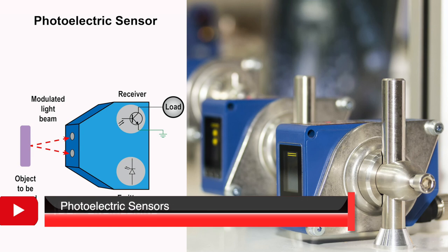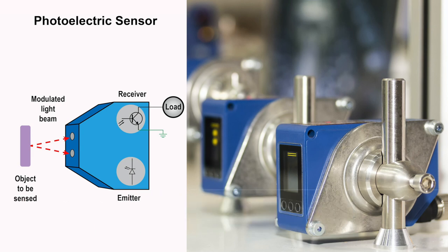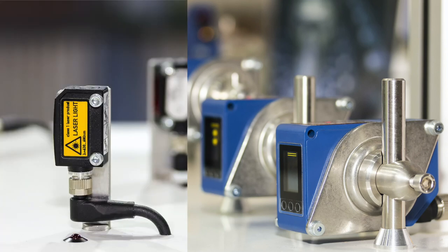Another type of sensor is the photoelectric sensor. These sensors emit a light and detect a difference in the light received from the light source. They consist of an emitter for emitting light and a receiver for receiving the light. These two components may or may not be housed in separate units.